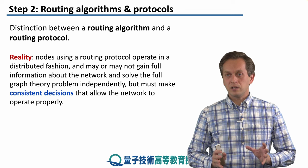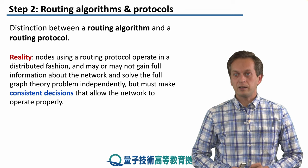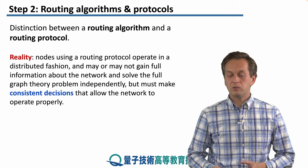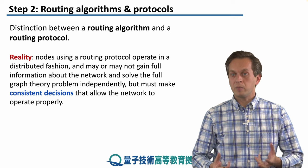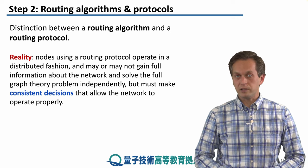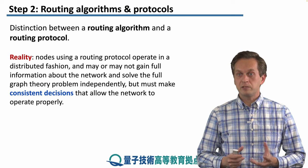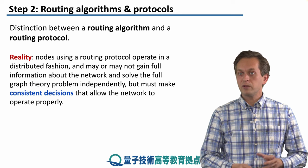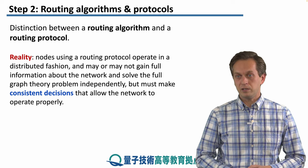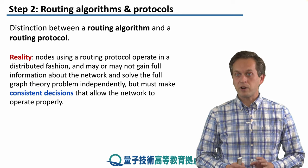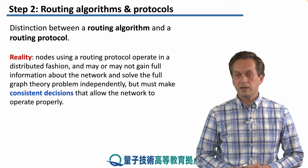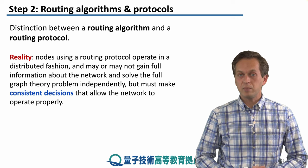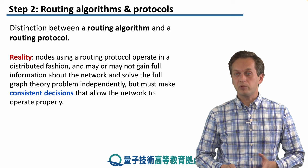The nodes in the network are always trying to find information about the topology of the network, the state of the network, and the various conditions of the links. They do this in a distributed fashion, and sometimes they may gather information which differs from its neighbors or other nodes. Regardless of how much information they have, we must ensure that consistent decisions are made in order to allow the network to operate properly.